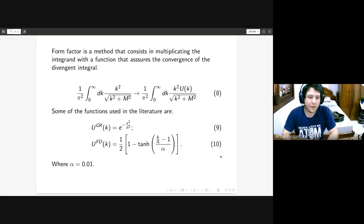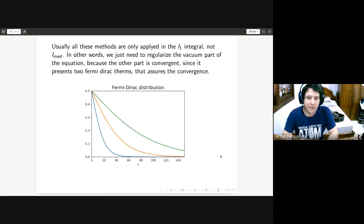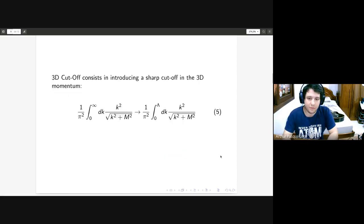There are form factors, which is another regularization procedure where we just multiply the integrand by a function that will make sure that everything converges. Here we have four examples: the Gaussian regularization and the Fermi-Dirac regularization. We can see this is an example of Fermi-Dirac distribution, and we can see that it obviously goes to zero when x gets large.